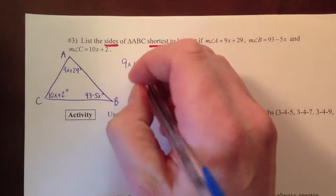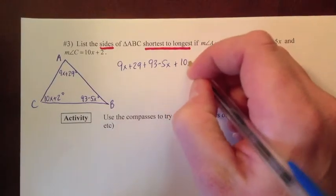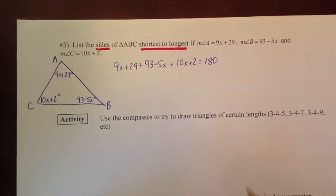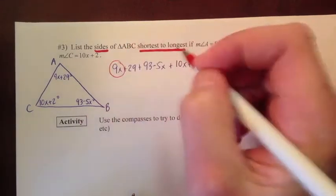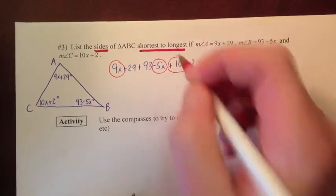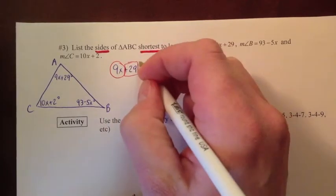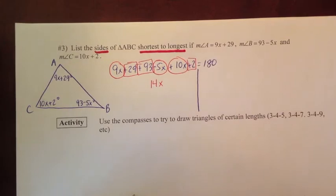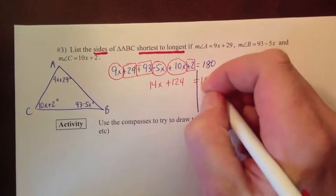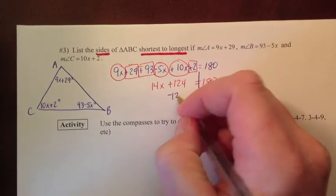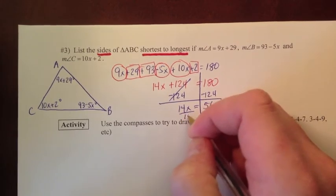So we make the equation: (9x + 29) + (93 − 5x) + (10x + 2) = 180. Let's combine like terms: 9x minus 5x plus 10x is 14x, and 29 plus 93 plus 2 is 124. So 14x plus 124 equals 180. Subtract 124 from both sides: 14x equals 56. Divide by 14: x equals 4.